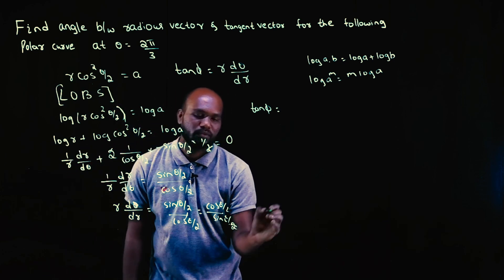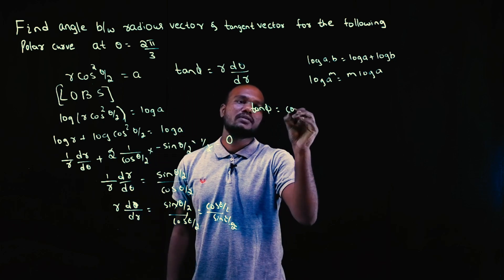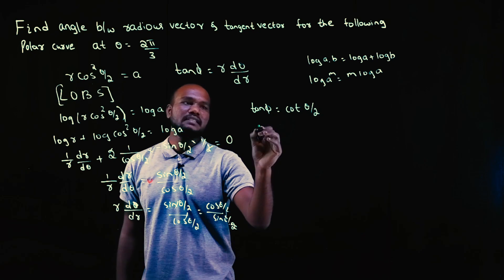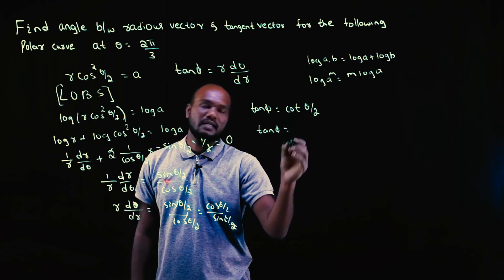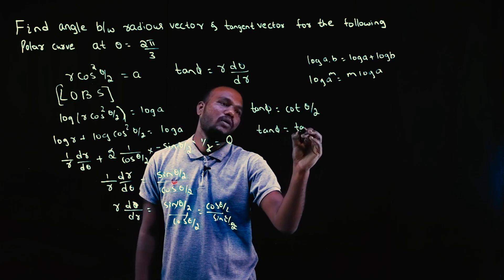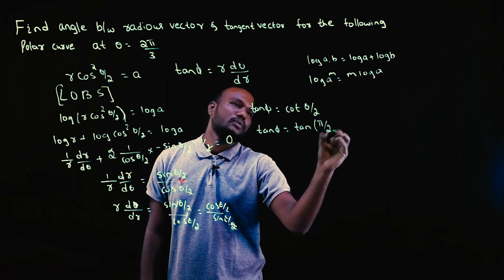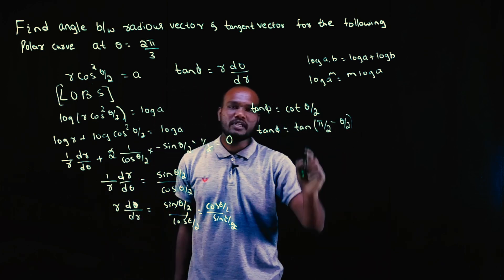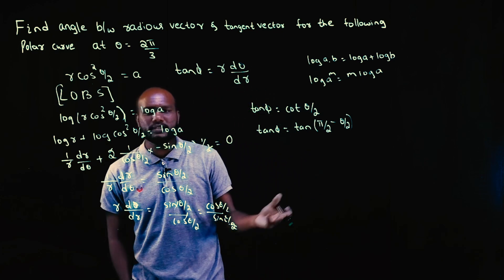So cos by sin is what? Cos theta by 2 by sin theta by 2. When does this happen? Cos is there. So first let's convert this into tan. This will become tan of pi by 2 minus theta by 2. How to convert this? Why to convert from here to here? This is all learned in 11th and 12th.